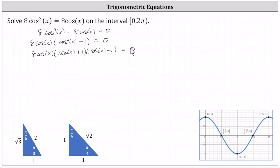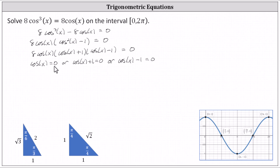Because the product on the left must equal zero, we know either cosine x must equal zero, or cosine x plus one must equal zero, or cosine x minus one must equal zero. Cosine x equals zero is already solved. For the next equation, we subtract one on both sides, giving us cosine x equals negative one. For the last equation, we add one to both sides, giving us cosine x equals one.